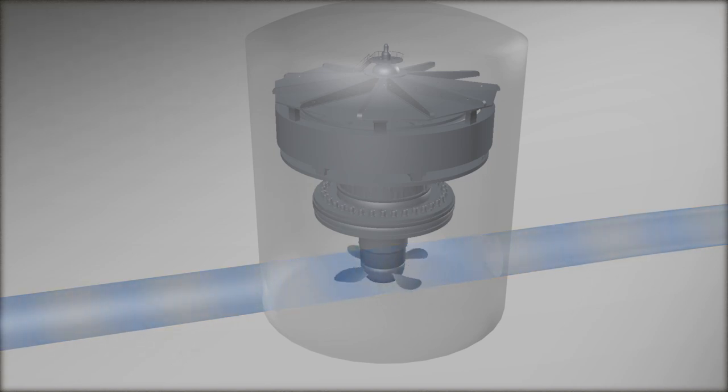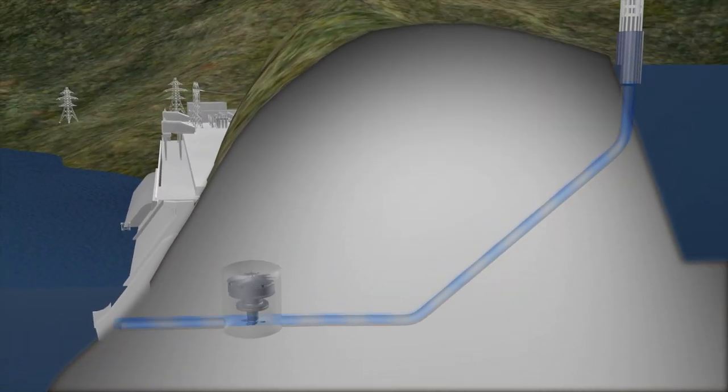When demand is low, electricity from other sources is used to power huge pumps that push the water back into the upper reservoir, essentially storing that energy for later use.